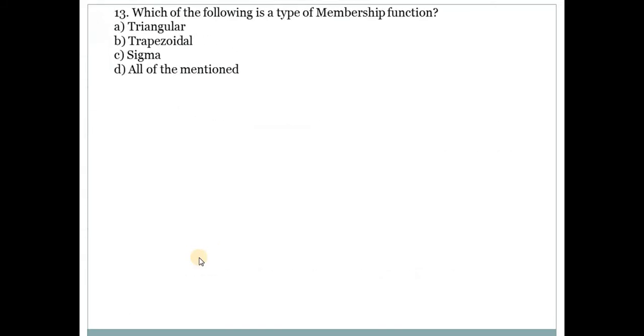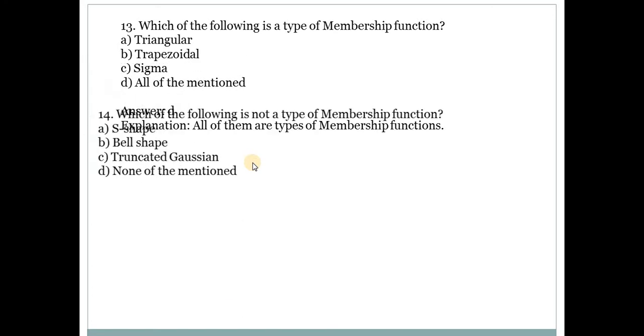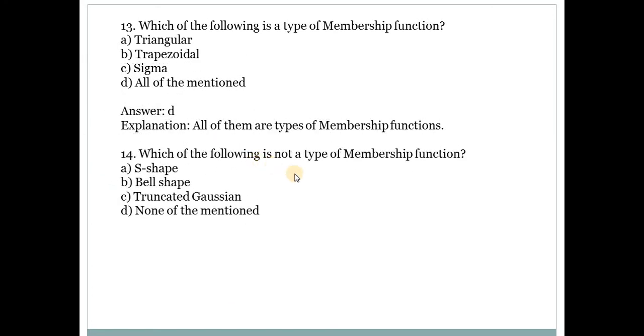Next question: Which of the following is a type of membership function? Answer is all of the mentioned, answer D. That is triangular, trapezoidal and sigma. These are the types of membership functions in fuzzy. Next question: Which of the following is not a type of membership function? None of the above. That is S shape, bell shape and truncated Gaussian are not the membership function.